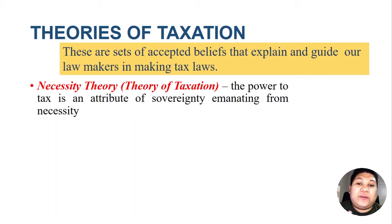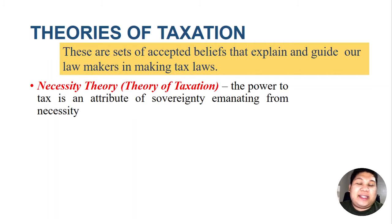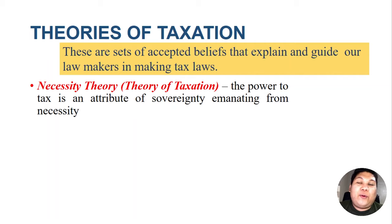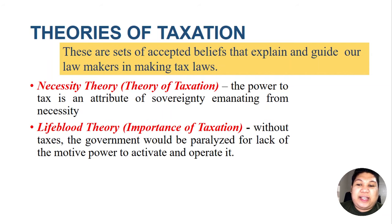Under the necessity theory, the power to tax is an attribute of sovereignty emanating from necessity. There is a tax because there is a need from the people — the need for protection, shelter, health infrastructure, education, and so on. Because of these needs, there must be a source of funds for the government to accommodate the demands of the people, hence there is a tax.